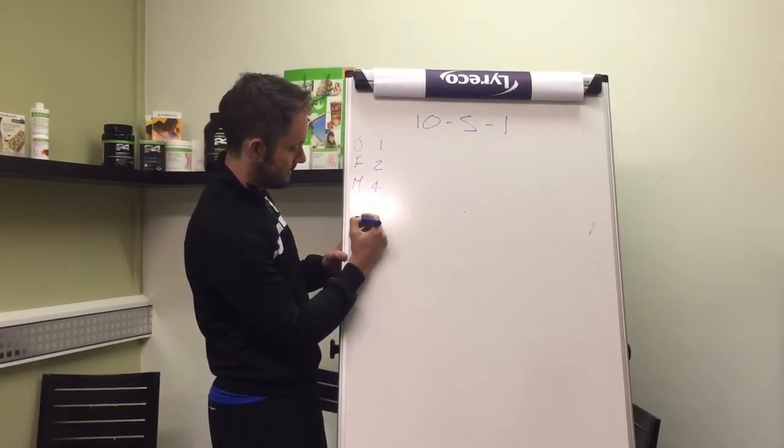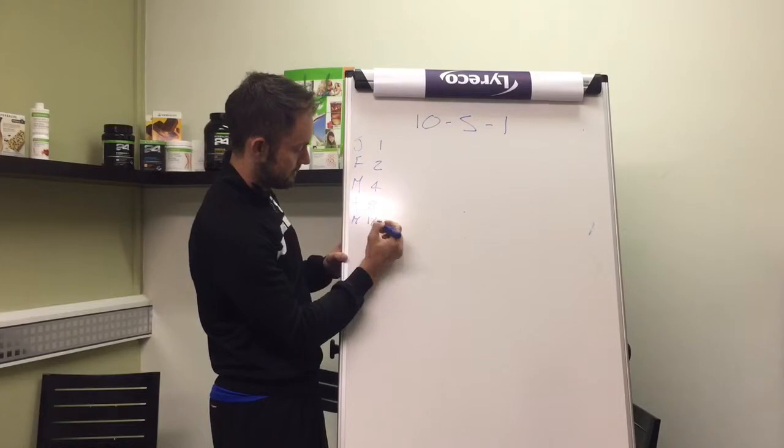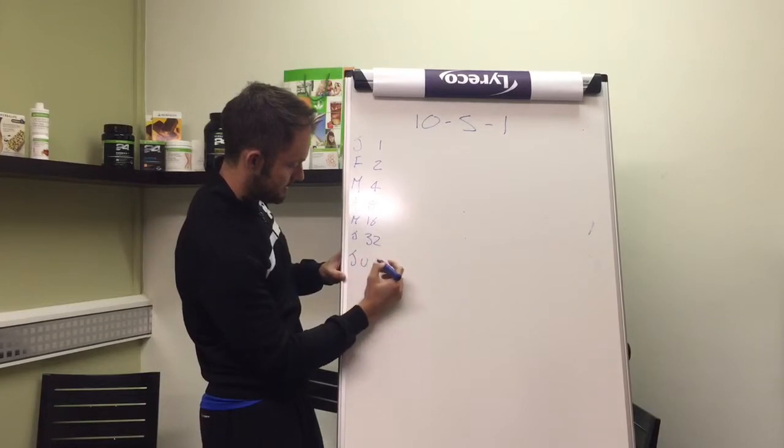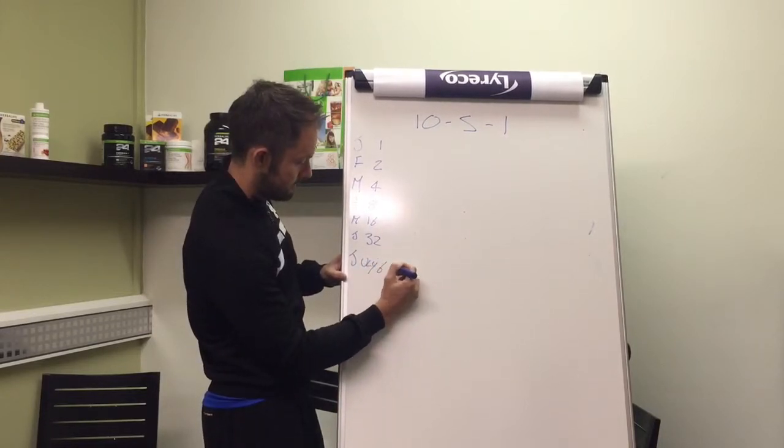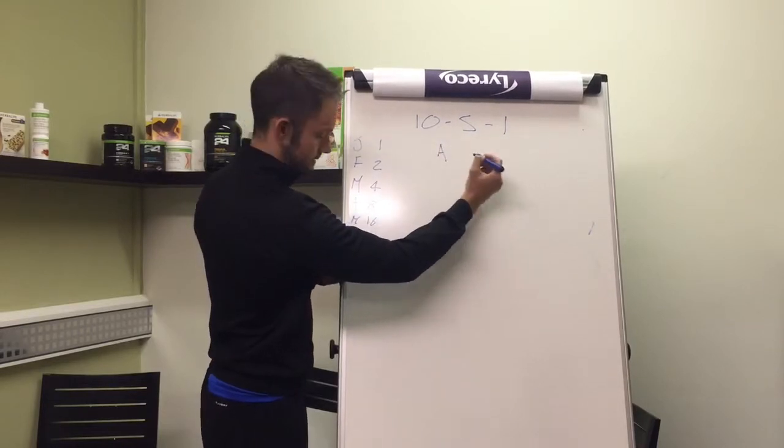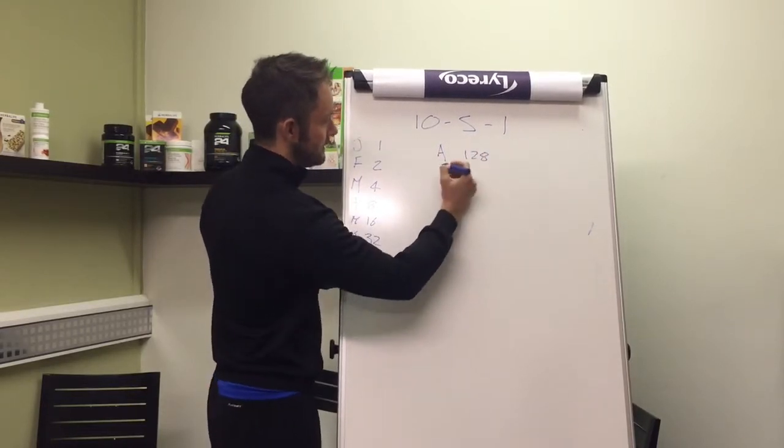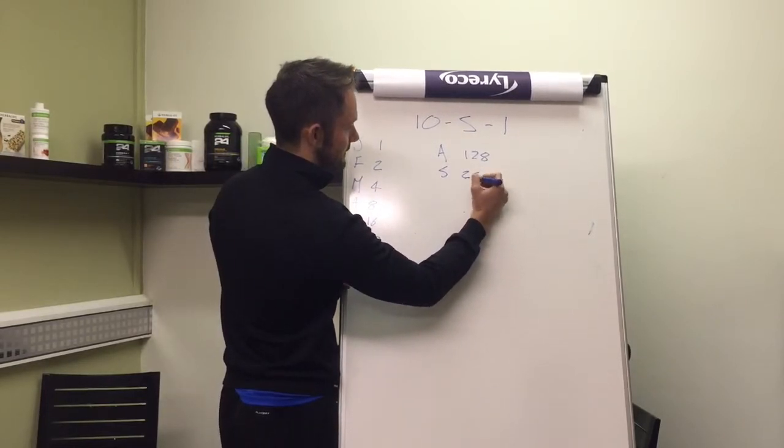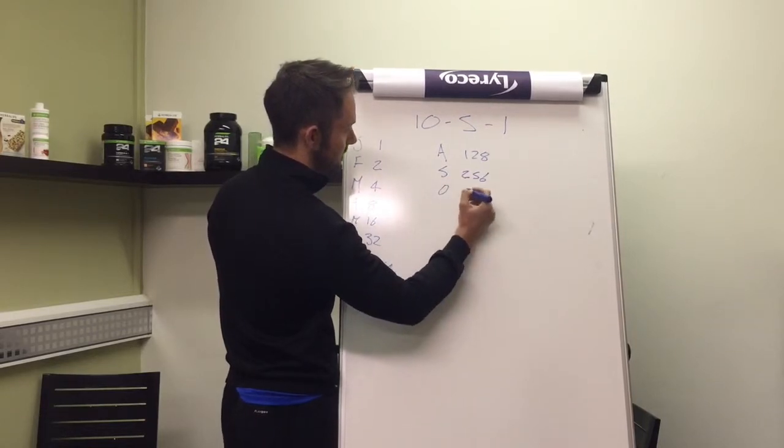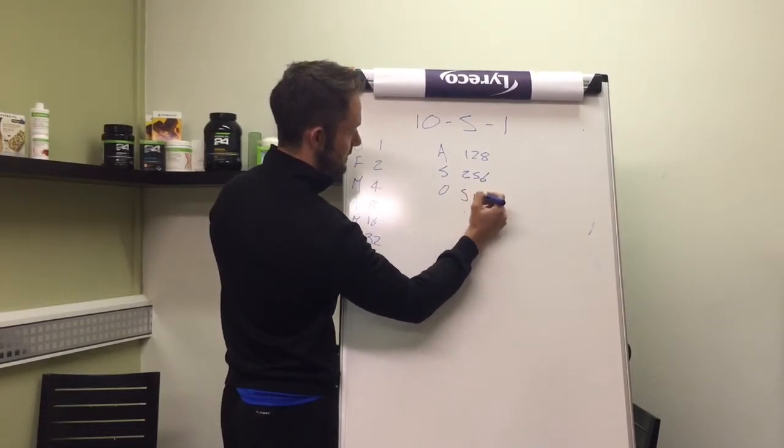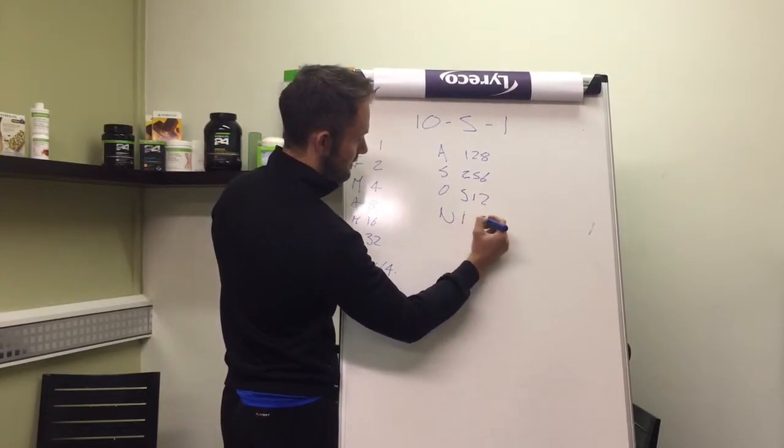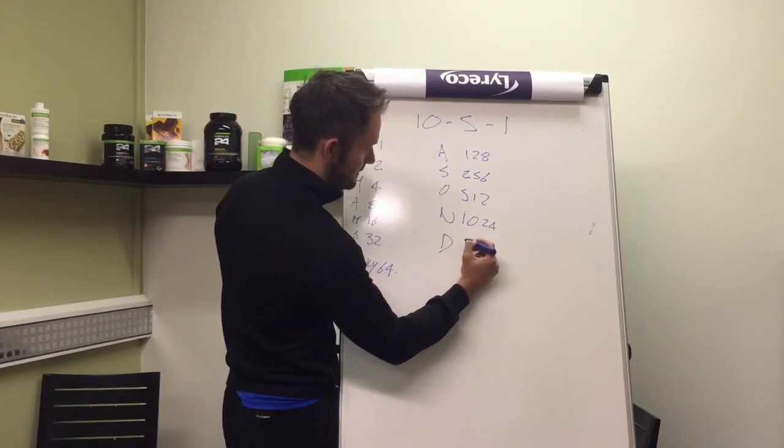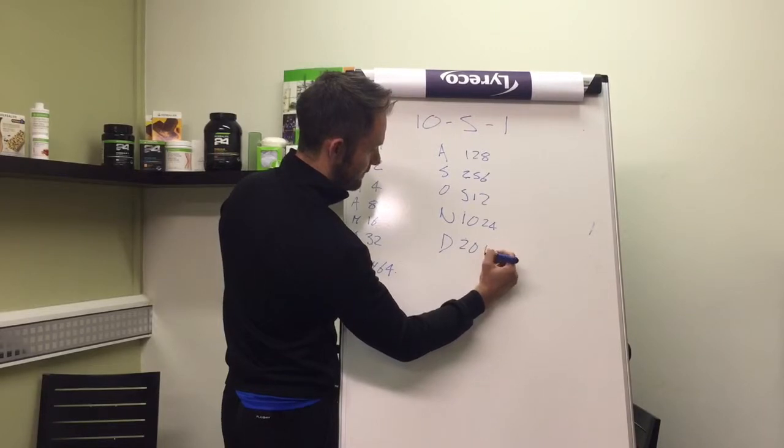April, May, June, July 24, August we'll be at 128, September we'll be on 256, October 512, November 1024, and December 2048.